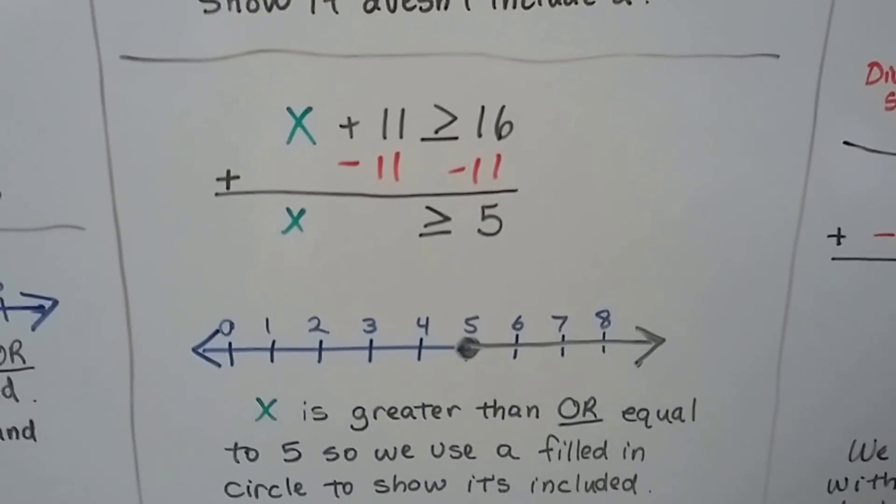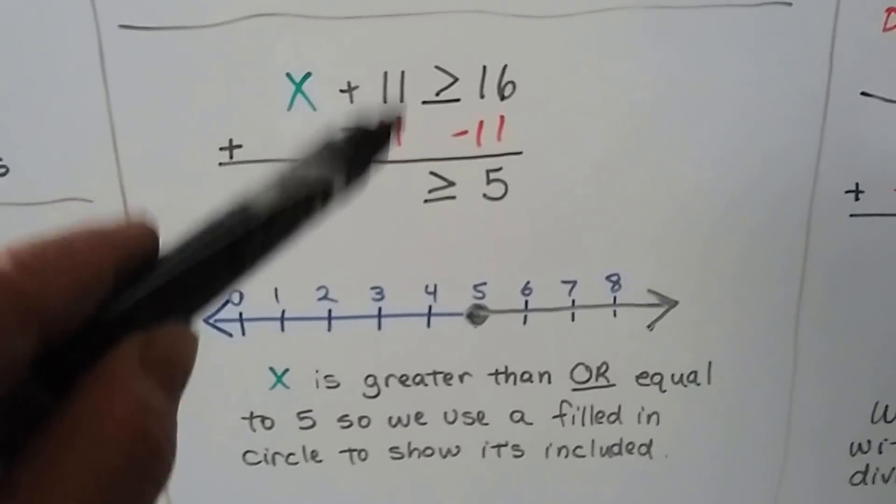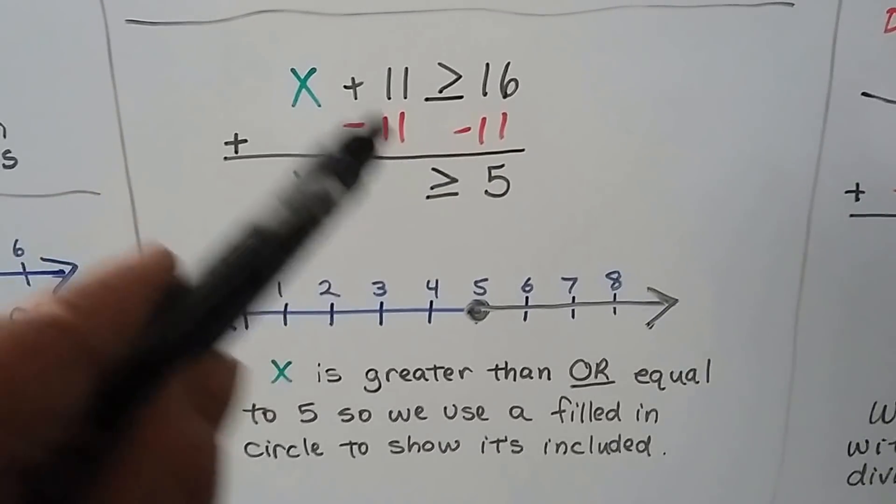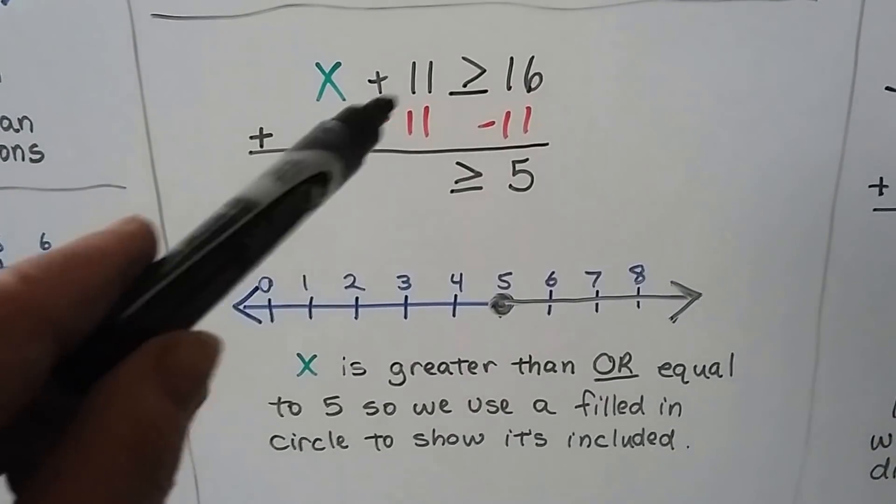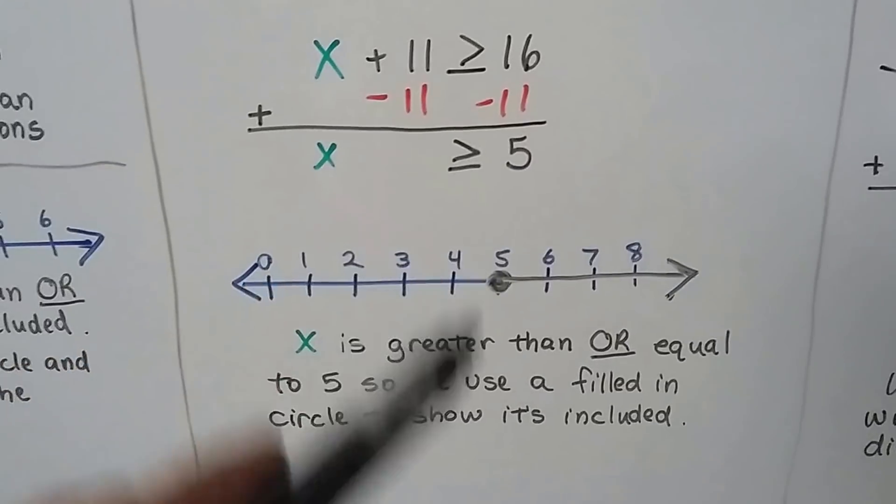Here we have x plus 11 is greater than or equal to 16. We make a zero pair. We add a negative 11 to both sides. And now this is gone, and we have x is greater than or equal to 5.